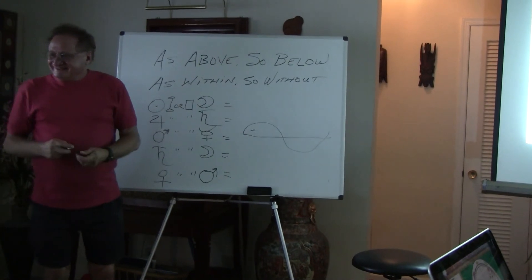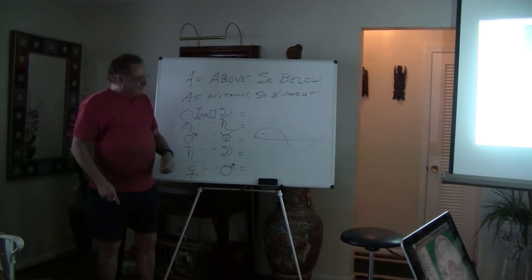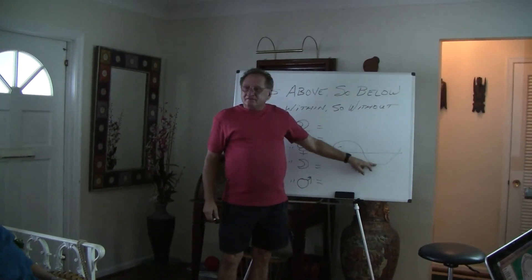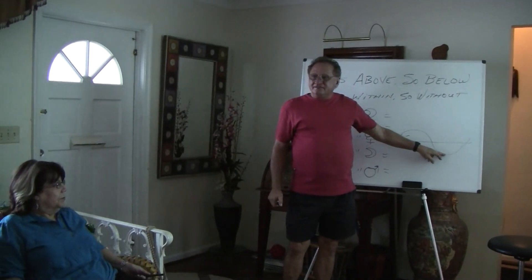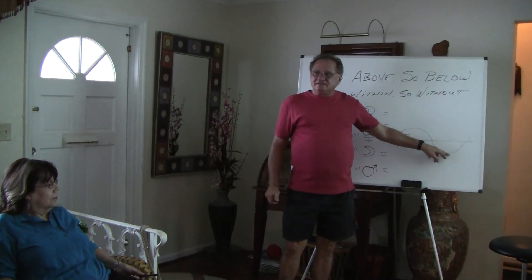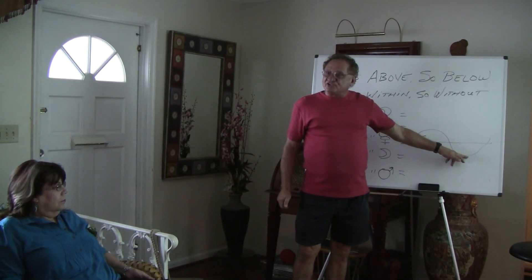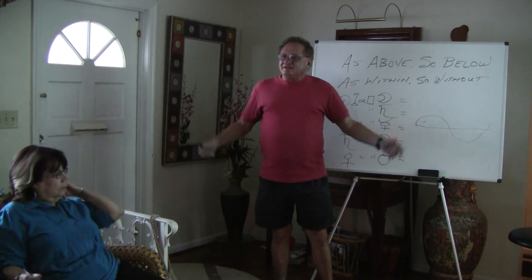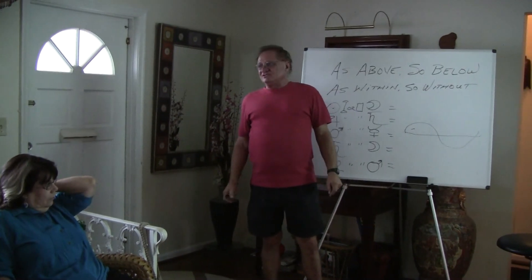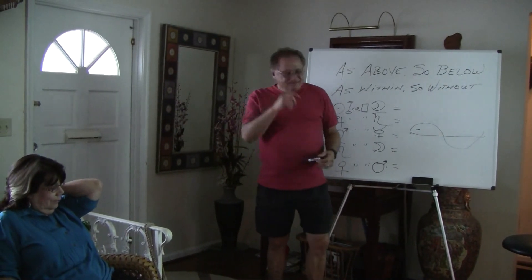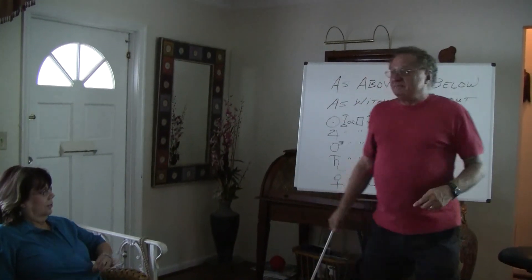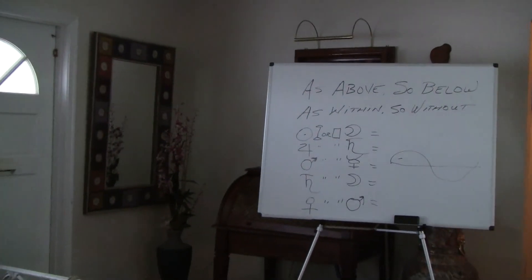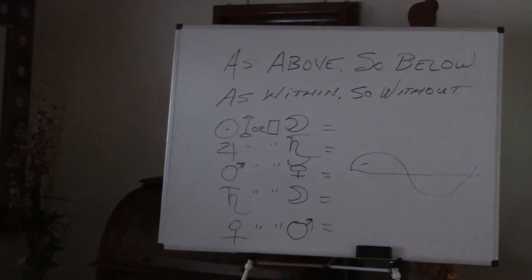The Sun descends on December 21st, the first day of winter, and stays three days and three nights in Capricorn — the sign of Saturn, Satan — before rising again on the 25th: a rebirth of the Sun. That's the belly of the whale; Jonah was in the belly for three days and three nights before being spit out again. There are so many mysteries hidden in scriptures — that's what I love about it.